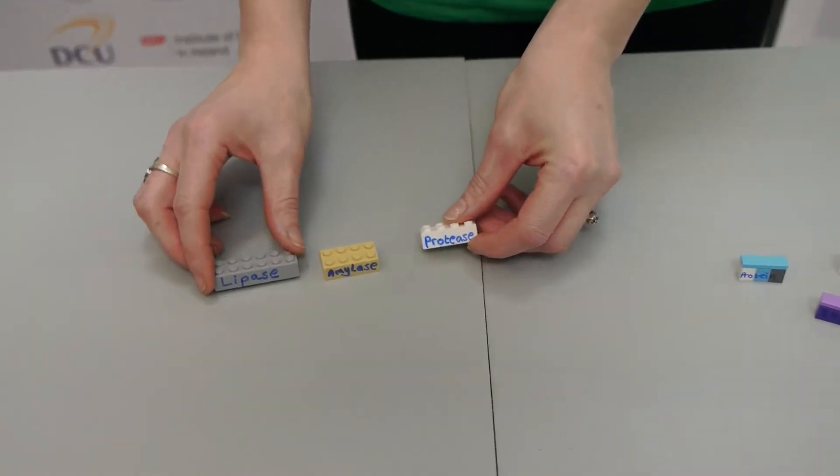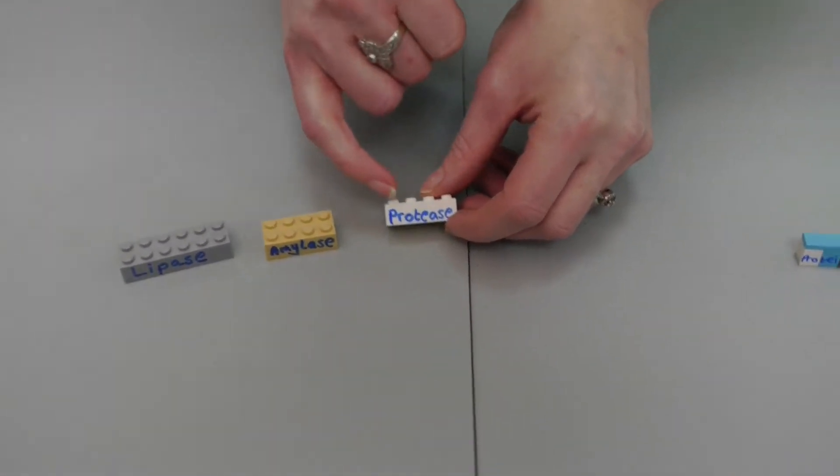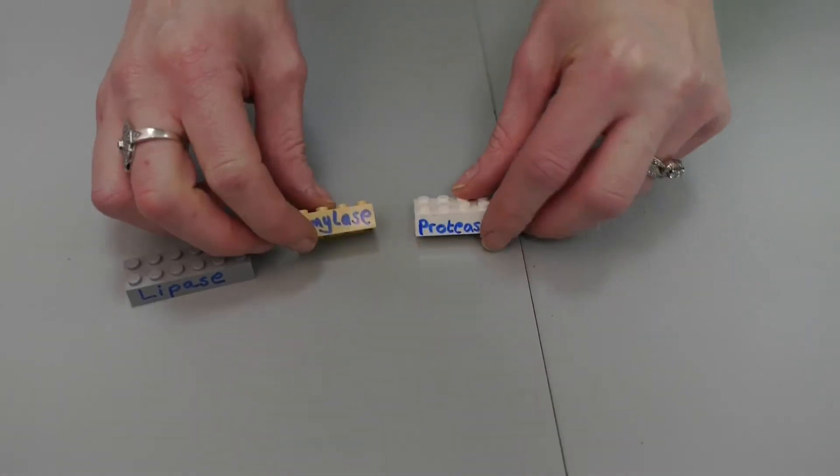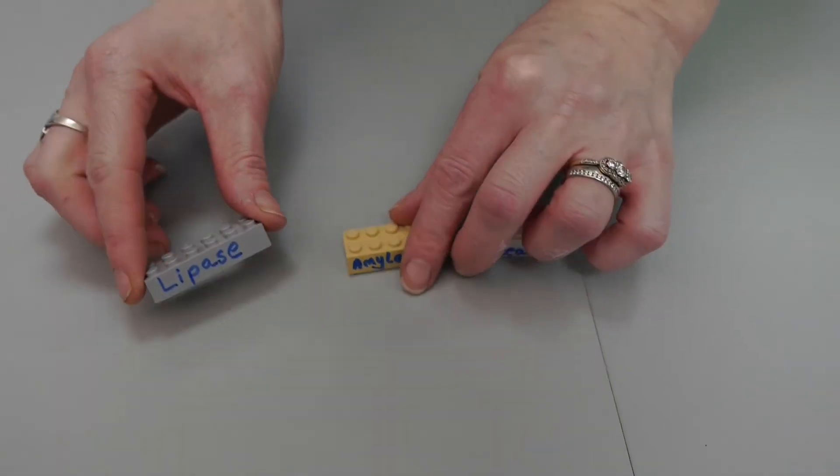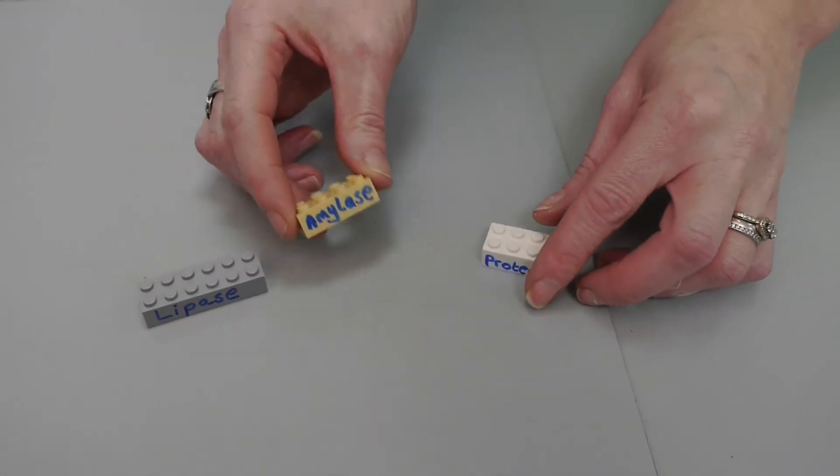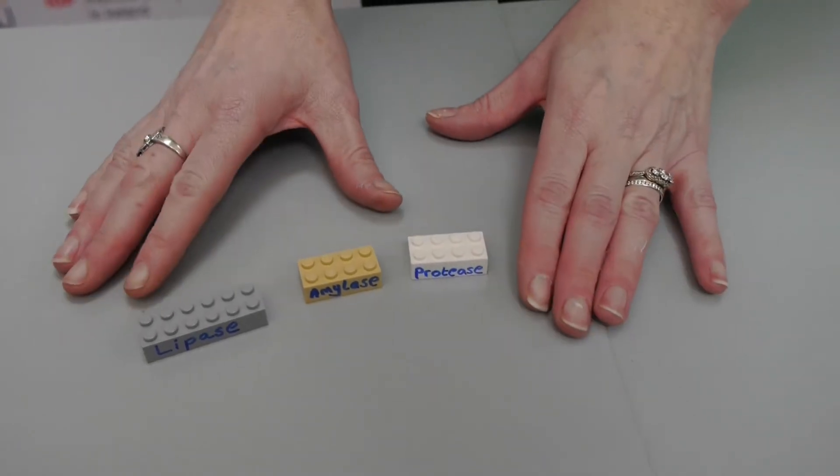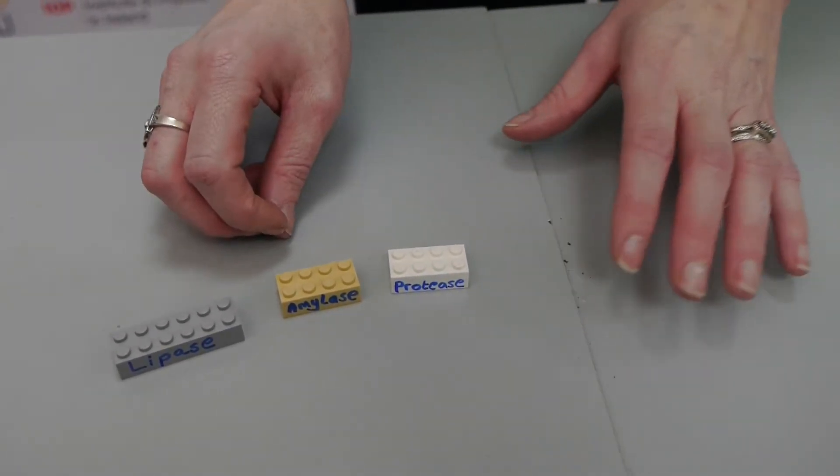So here we have three different colors of Lego and I've written three enzymes on the front of the Lego bricks. We've got lipase, amylase and protease. We're just going to keep it simple with the three Lego bricks.